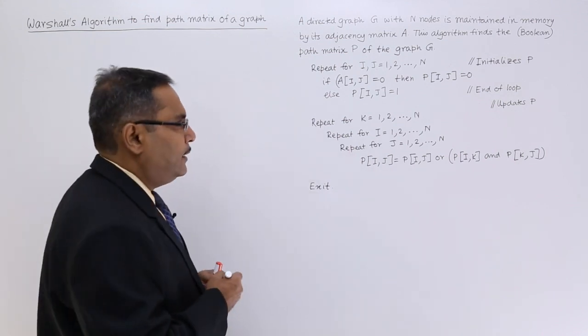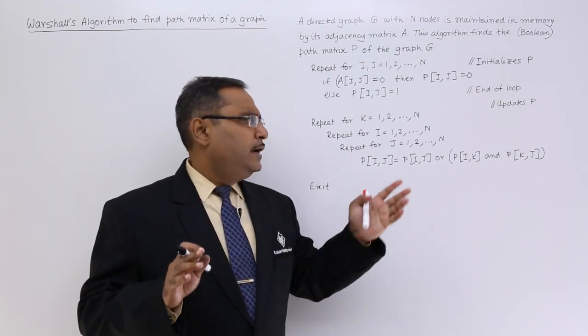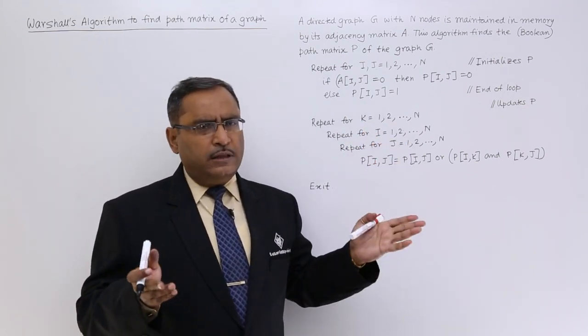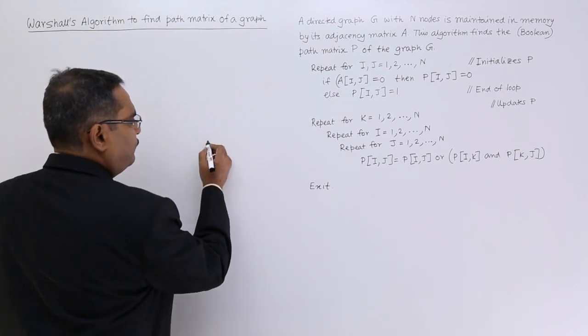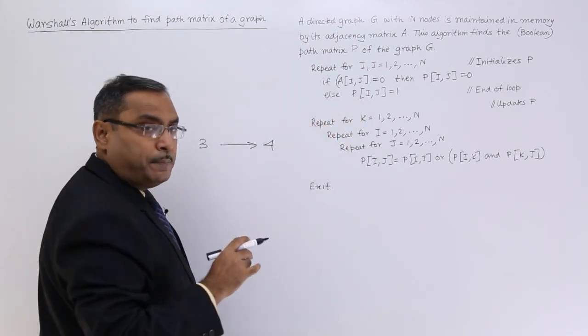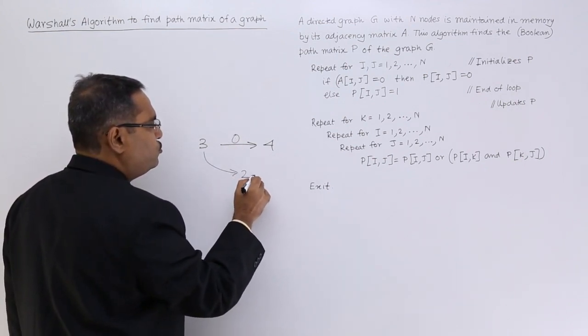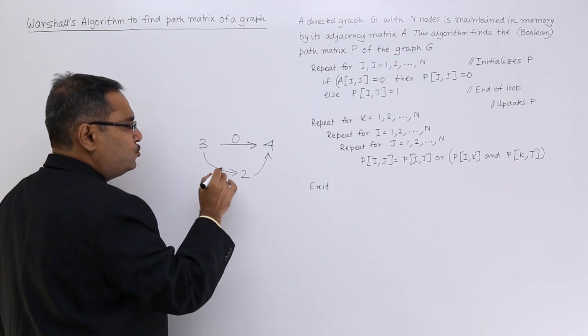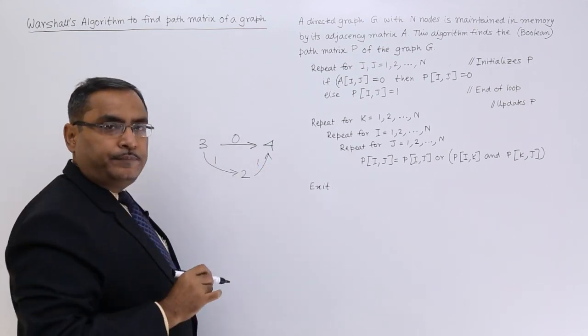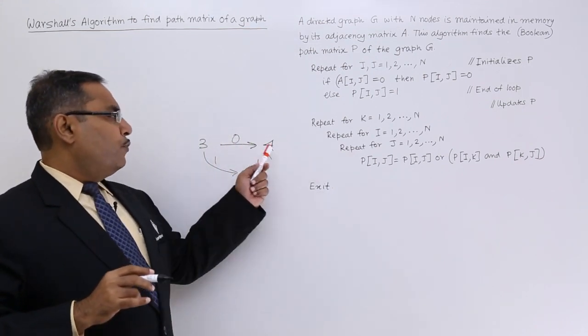If it is not clear, I am just going to discuss that. Let us suppose value of k equals, say, 2. In one of the iterations, it must be having the value 2. Say from 3 to 4 in the initial path matrix, we are having 0. But from through 2, I am getting 3 to 2—there is a path. 2 to 4—there is a path. If I am not getting, I am repeating again.